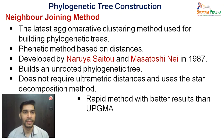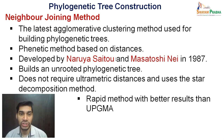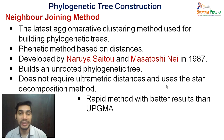Moving to the next method, called Neighbor Joining. It is the latest agglomerative clustering method used for building phylogenetic trees. It is a phenetic method based on distances, just like UPGMA. Developed by Naruya Saitou and Masatoshi Nei in 1987. It builds an unrooted phylogenetic tree, does not require ultrametric distances, and uses the star decomposition method.